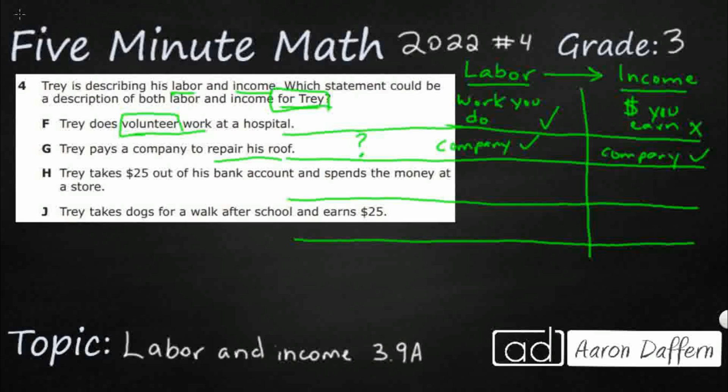Trey, let's check H. Trey takes $25 out of his bank account and spends the money at the store. Well, he's not doing any labor because he's not working anything. He's taking money out of the bank. So, there's no labor involved. And he's not earning any money. He's actually spending money. He's taking money, assuming he's already earned, and spending it. So, there's no labor. There's no income there.